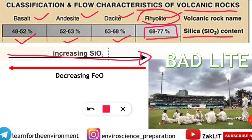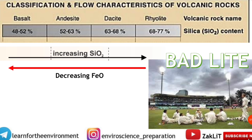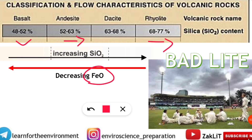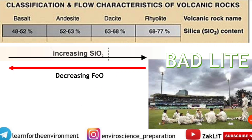This order — basalt, andesite, dacite, rhyolite — shows increasing SiO₂ content. It also shows one other important thing: decreasing ferrous oxide (FeO) level. Basalt has the least silica content but the maximum ferrous oxide (FeO) concentration. As we move up from basalt to rhyolite, FeO concentration decreases. So FeO is the opposite trend to increasing silica content.